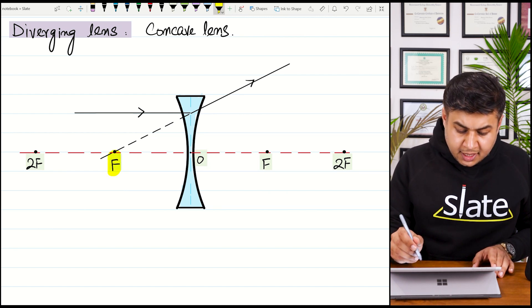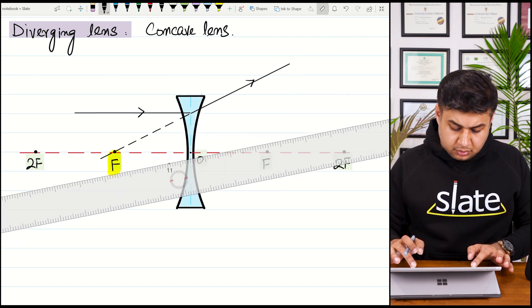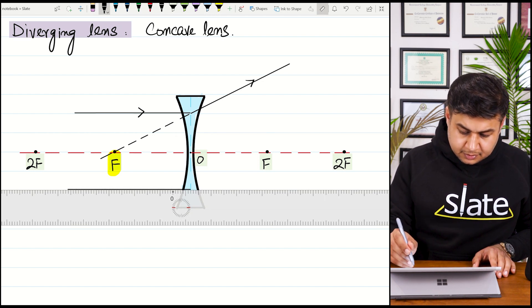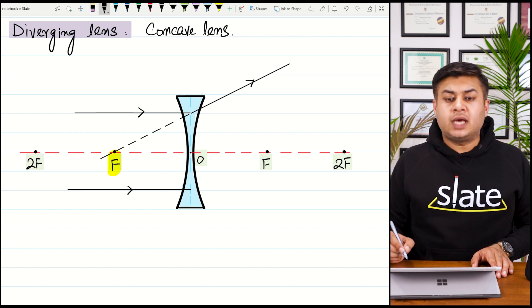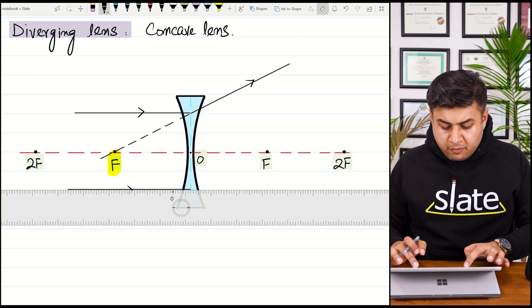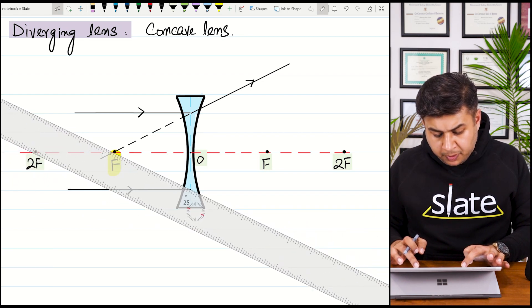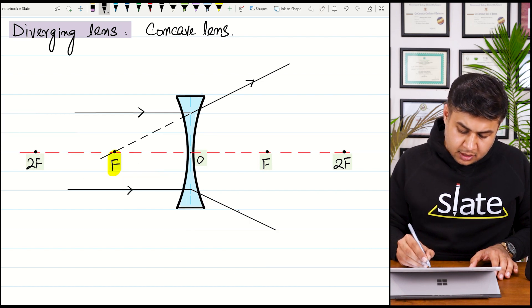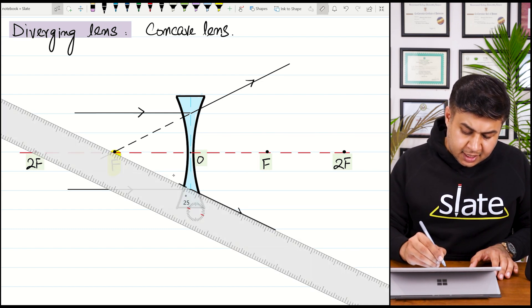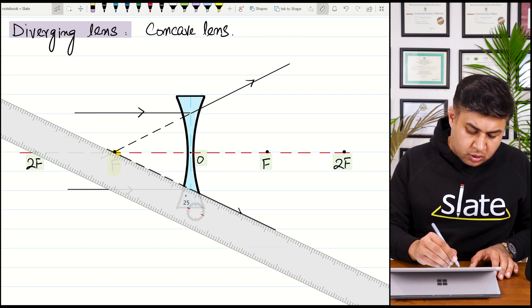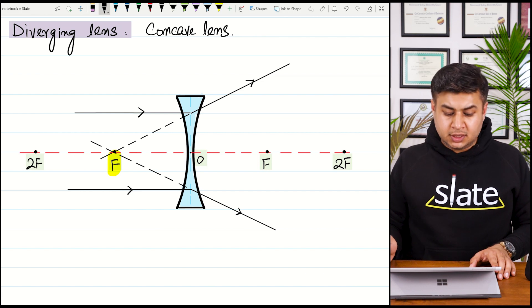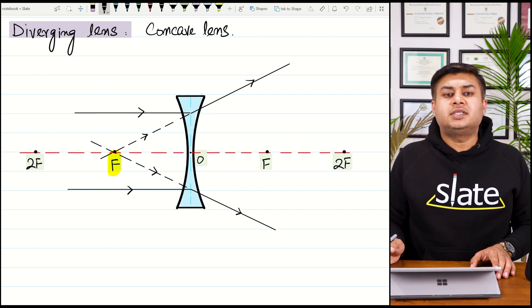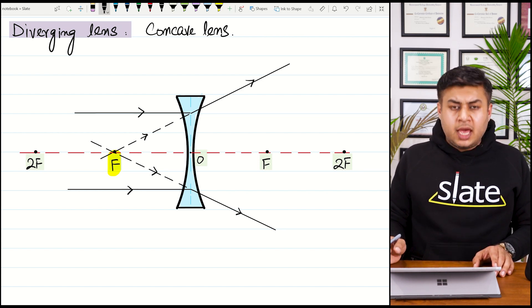when you stretch it with a dotted line inside the lens, it will pass through a point called as principal focus. So once again, this ray is coming parallel to the principal axis. When this ray diverges and is extended towards the back side, it will pass through the principal focus. It appears that